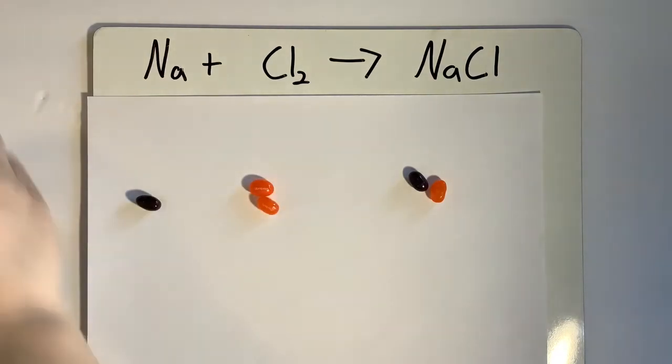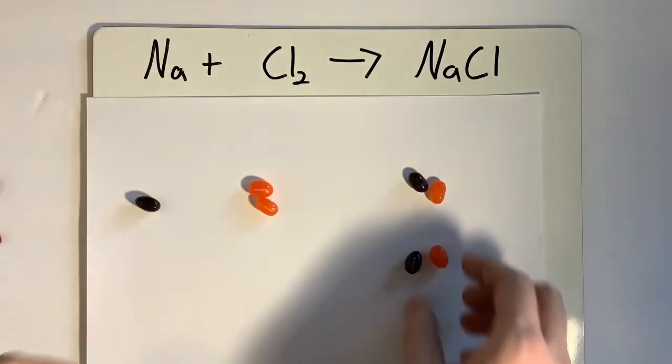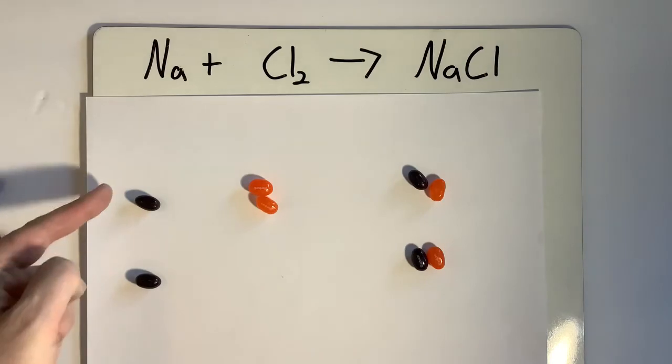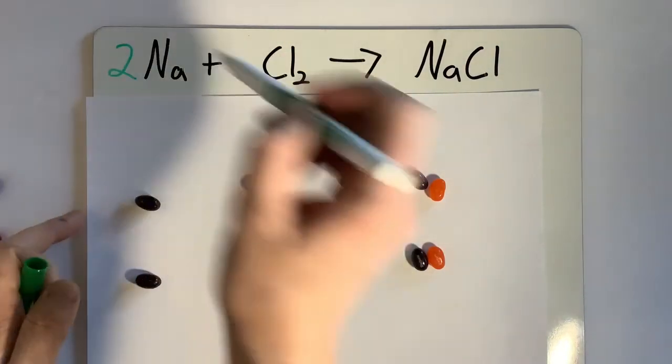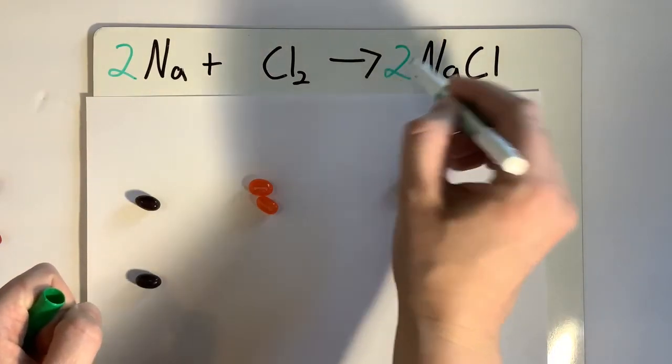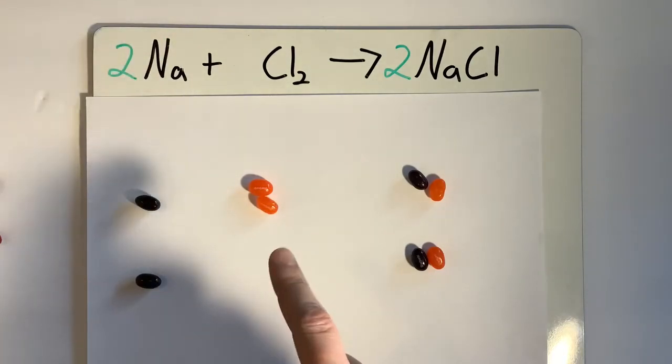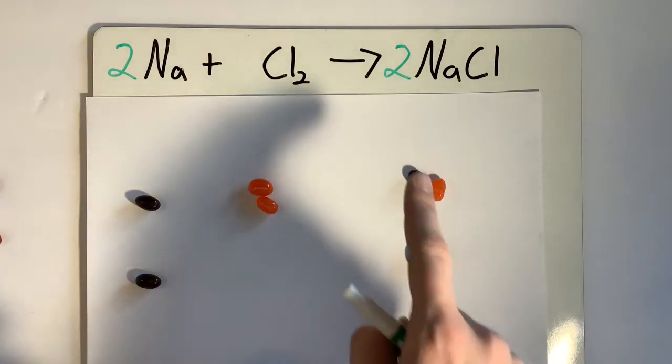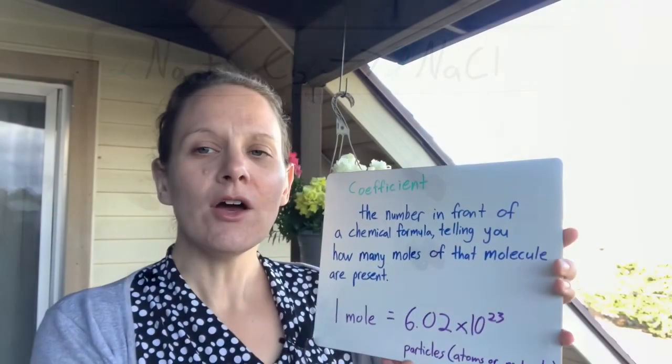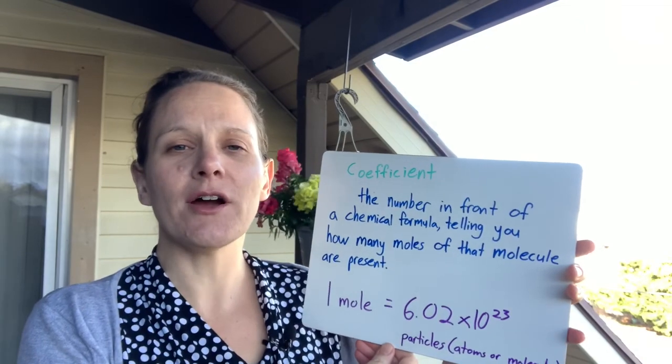We need more oranges on this side, but we can't just add orange for funsies. We have to add the whole molecule. So now my oranges are even, but now my purples are uneven. So I need another purple. So now I have two of the sodiums, so I put two as the coefficient, plus still one chlorine molecule. And I have two sodium chloride molecules, so I put two as a coefficient there. This means two moles of sodium plus one mole of chlorine as a molecule, Cl2, forms two moles of sodium chloride. It's combining, so it's a synthesis reaction. Coefficients tell us how many moles there are of whatever they're in front of.